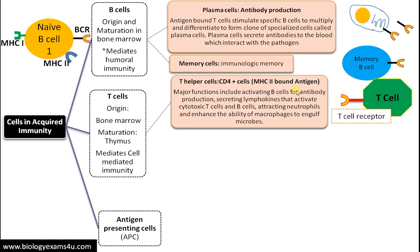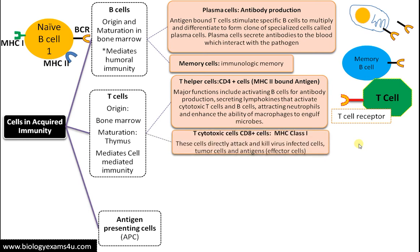T helper cells have a T cell receptor that can recognize only antigen bound to MHC class 2. The second subtype is T cytotoxic cells, which have a CD8+ receptor. The major receptor involved is MHC class 1. If a virus-infected cell presents a portion of the virus on MHC class 1, cytotoxic T cells can directly interact with and kill that cell, thereby preventing further infection.